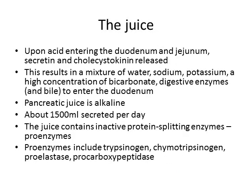So let's talk about the juice that the pancreas makes. Once food enters from the stomach into our duodenum and jejunum, that food is soaked in stomach acid. When that acid enters the duodenum, the duodenum and jejunum start secreting hormones called secretin and cholecystokinin, which we'll go into more detail on in the next few slides. And then pancreatic juice is secreted.